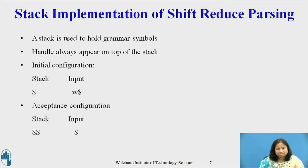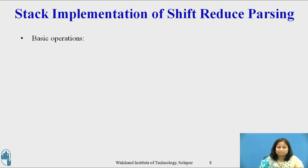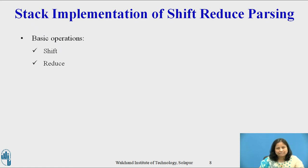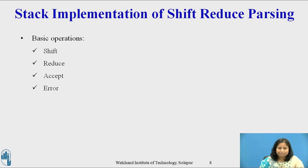After entering the acceptance configuration, the parser halts and announces successful completion of parsing. There are four possible actions a shift-reduce parser can make: shift, reduce, accept, and error. In shift action, the next input symbol is shifted onto the top of the stack. In reduce action, the parser knows the right end of the handle is at the top of the stack; it locates the left end of the handle within the stack and decides with what non-terminal to replace the handle. In accept action, the parser announces successful completion of parsing. In error action, the parser discovers that a syntax error has occurred and calls an error recovery routine.